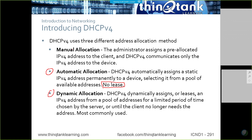Manual allocation is where you identify within the scope that a specific MAC address, when it does a request, is going to get a specific IP address. You've set up a policy saying this particular client will always get this address. We do this a lot with servers — if you want servers in your network to always get the same address, you use that methodology.